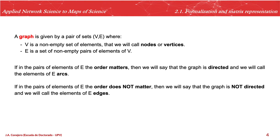The standard notation we will use is that a graph is given by a pair of sets V and E, where V is a non-empty set of elements called nodes or vertices, and E is a set of non-empty pairs of elements of V. If the order of pairs in E matters, the graph is directed and the elements are called arcs. If order doesn't matter, the graph is non-directed and the elements are called edges.